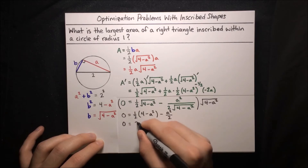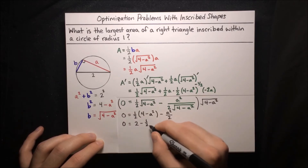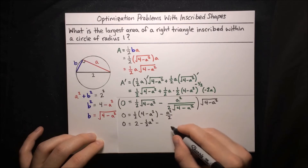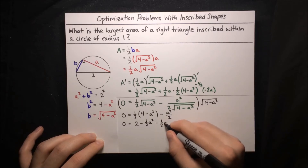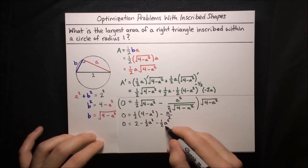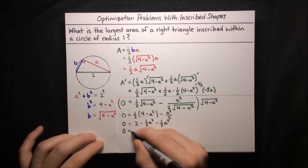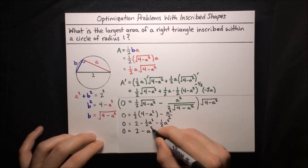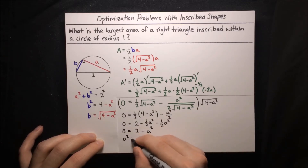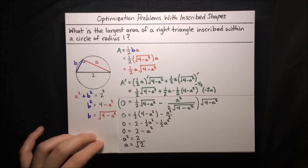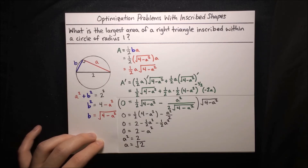Expanding: zero equals 2 minus one half a squared minus one half a squared, and those combine into just minus a squared. So zero equals 2 minus a squared, which means a squared equals 2, which means a equals the square root of 2 — the positive root since a is a physical length. You can check that this value is indeed a maximum of our area function by using the first or second derivative test.